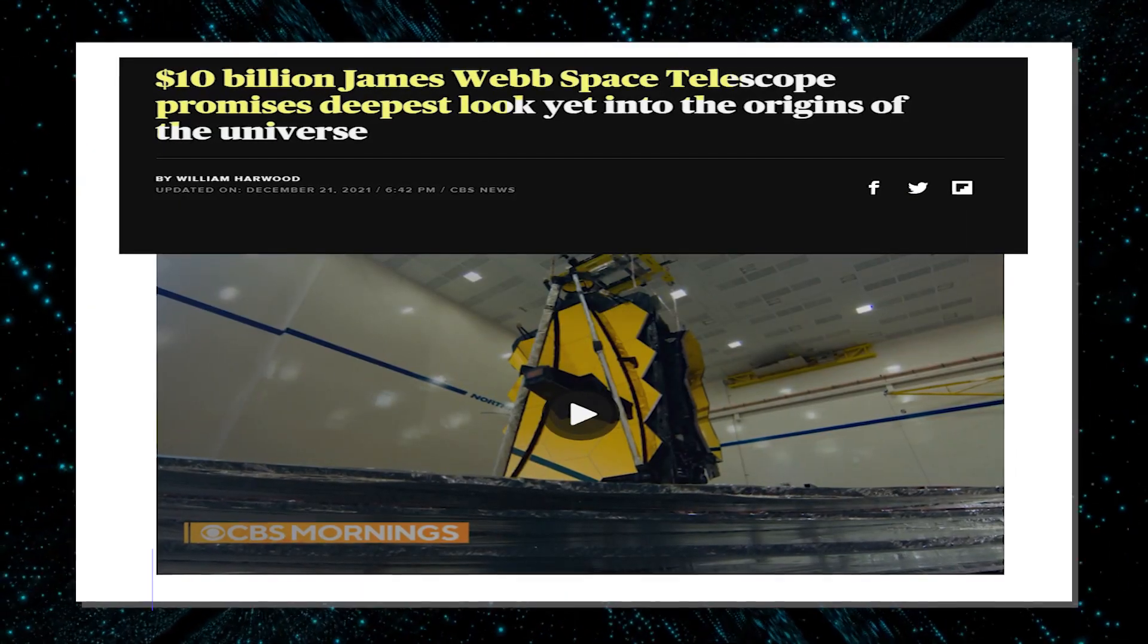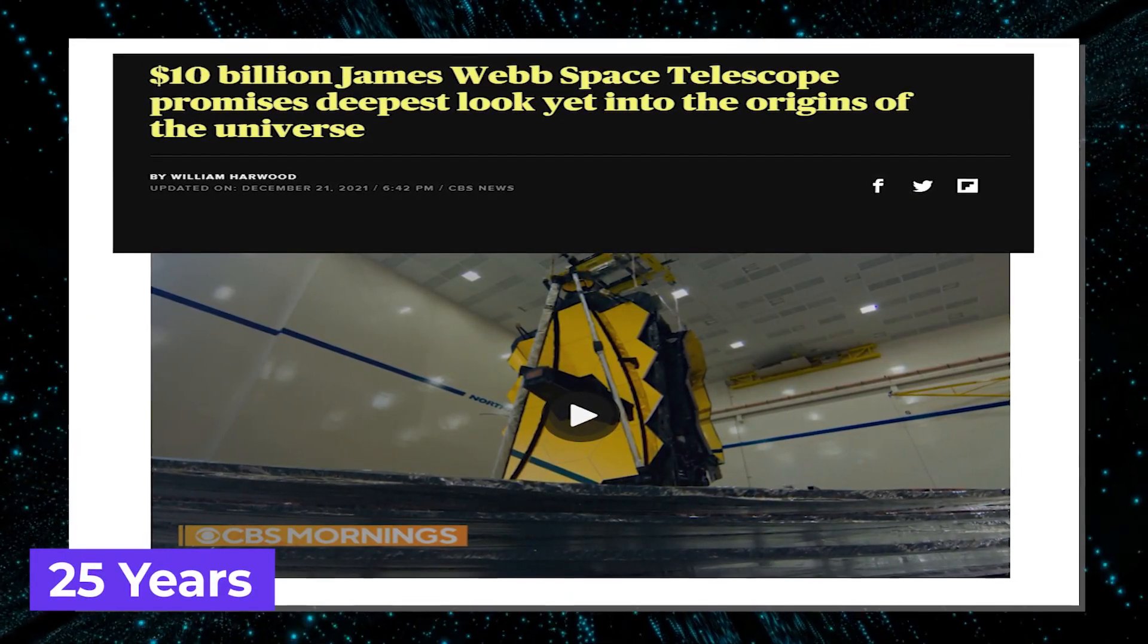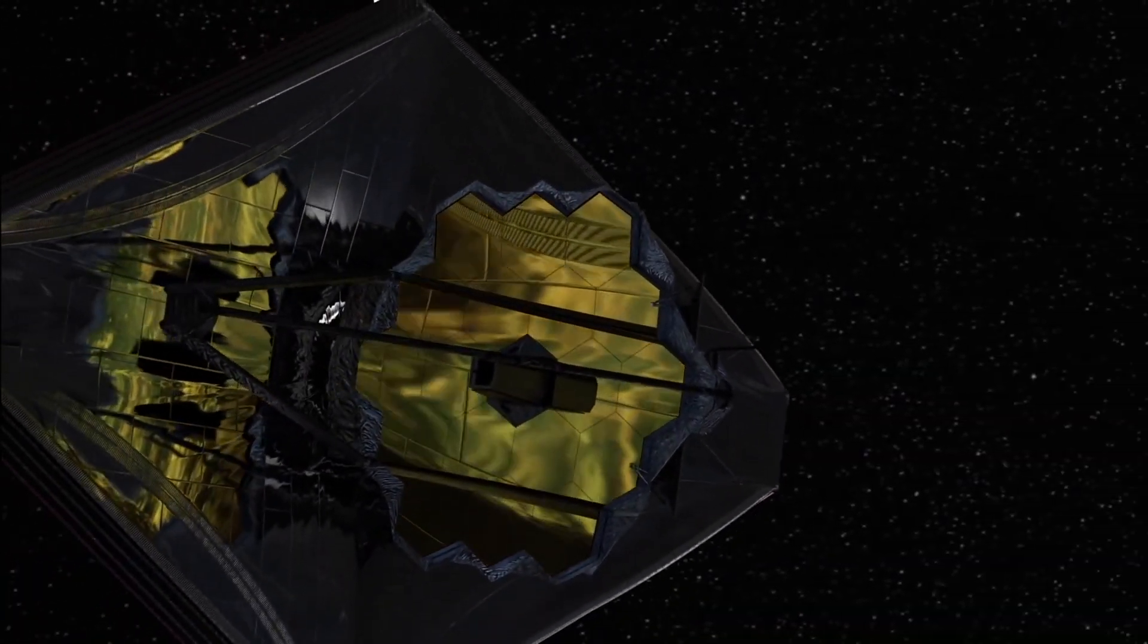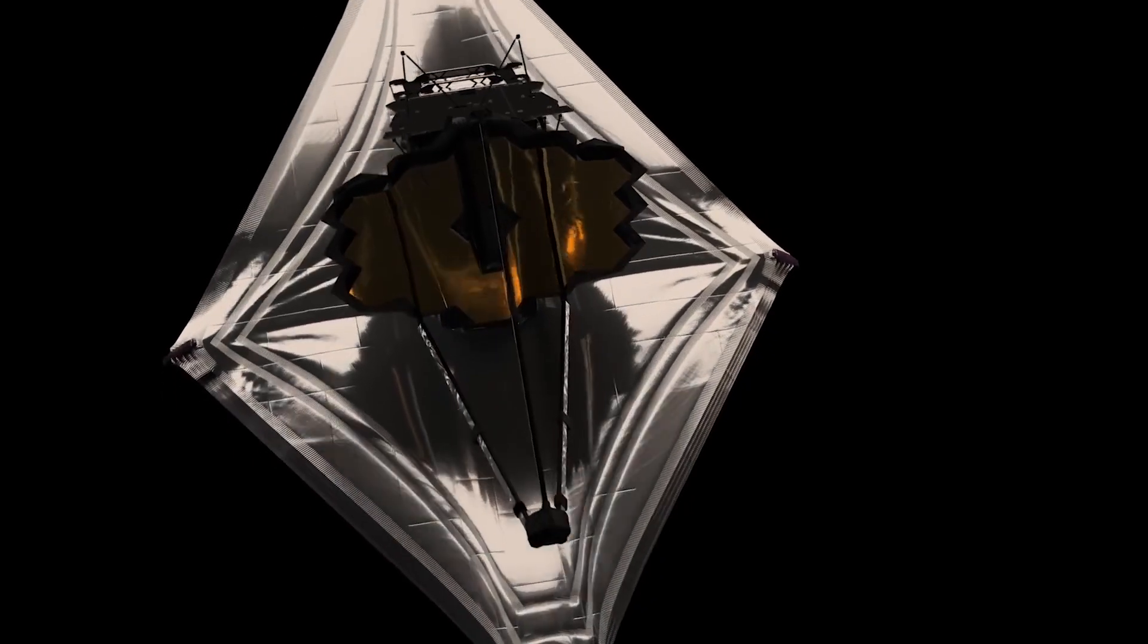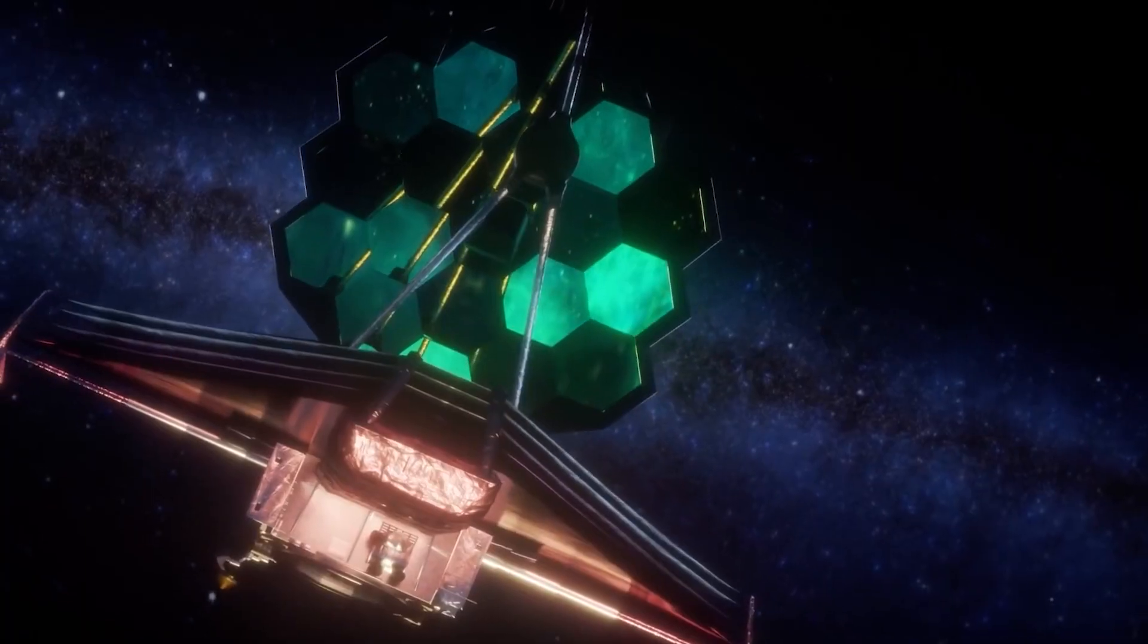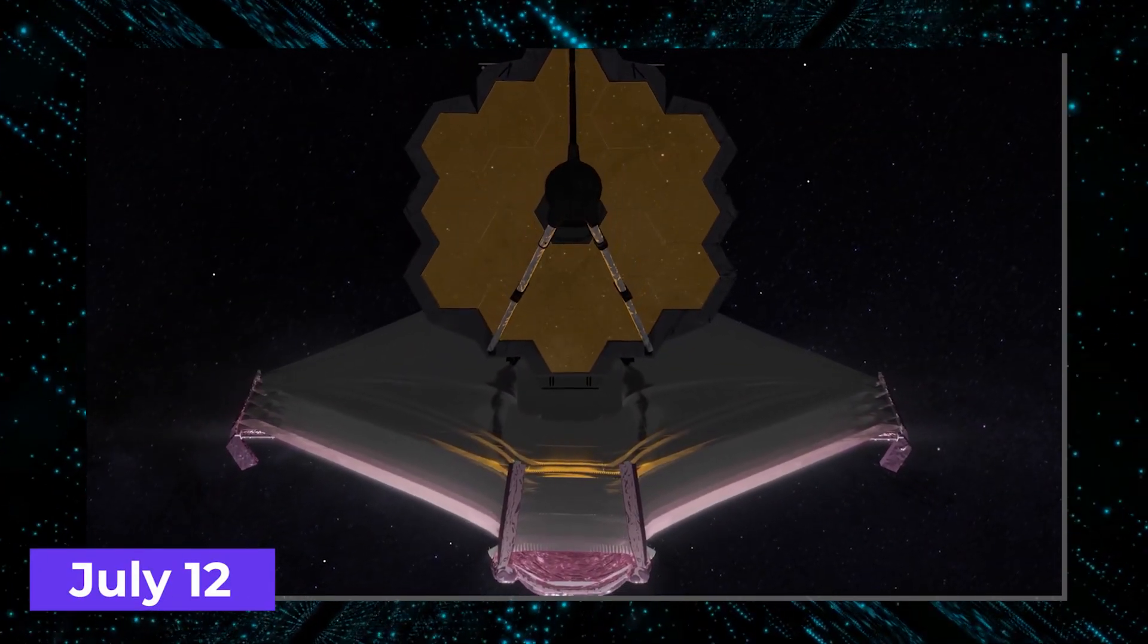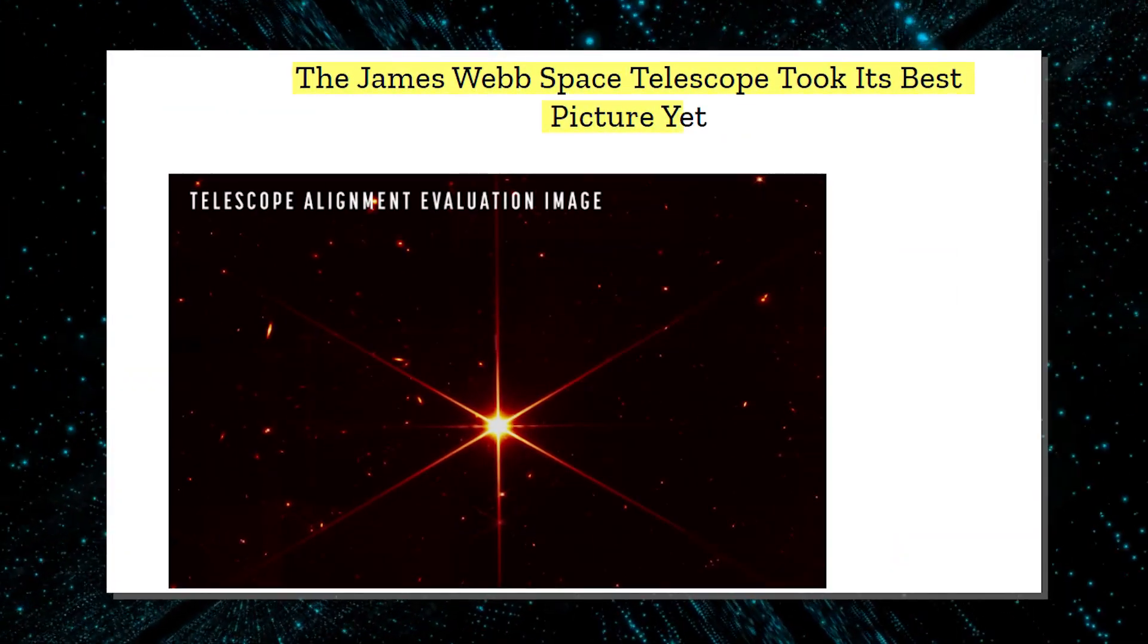The expectations from the JWST are astronomical and based on the evidence so far, it seems like the telescope will live up to the hype. Even though the telescope will release its first full-color images and spectroscopic data on July 12th, it has already sent back some test images.